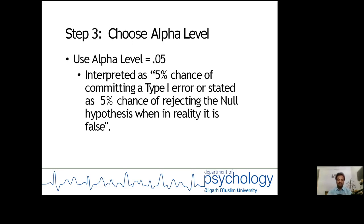Step three: Choose alpha level. In practice we are going to use 0.05 level of significance, and it can be interpreted as 5% chance of committing a Type I error, or stated as 5% chance of rejecting the null hypothesis when in reality it is false.